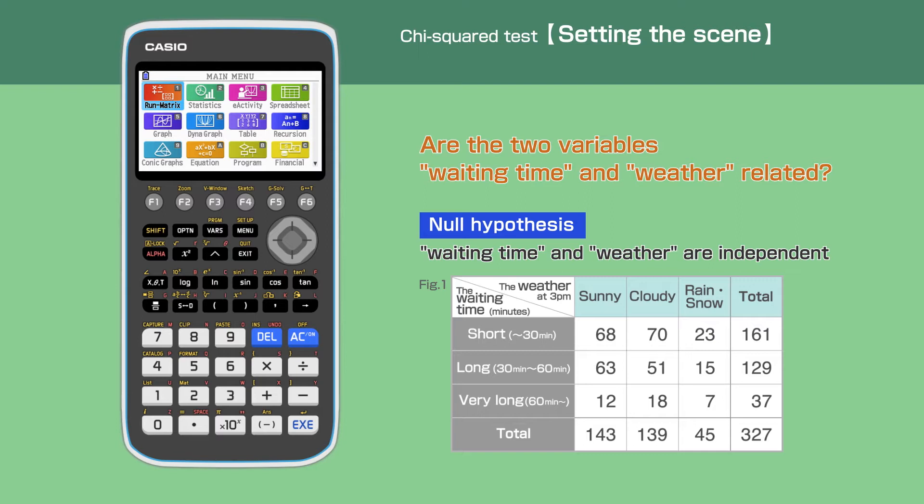In order to test this, we have collected the following information. One, the data is taken between 1st of January and 31st December 2019. All the data is taken at 3 PM each day. The weather is divided into three categories: sunny, cloudy, rain or snow. Three, the waiting time is also divided into three categories: short, long, or very long. There are 327 days of data excluding maintenance days.